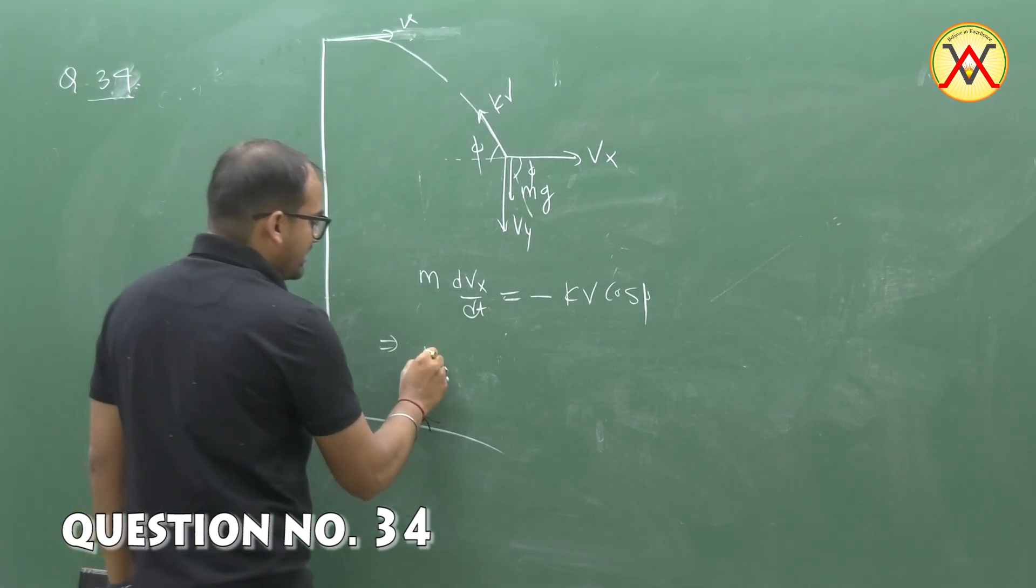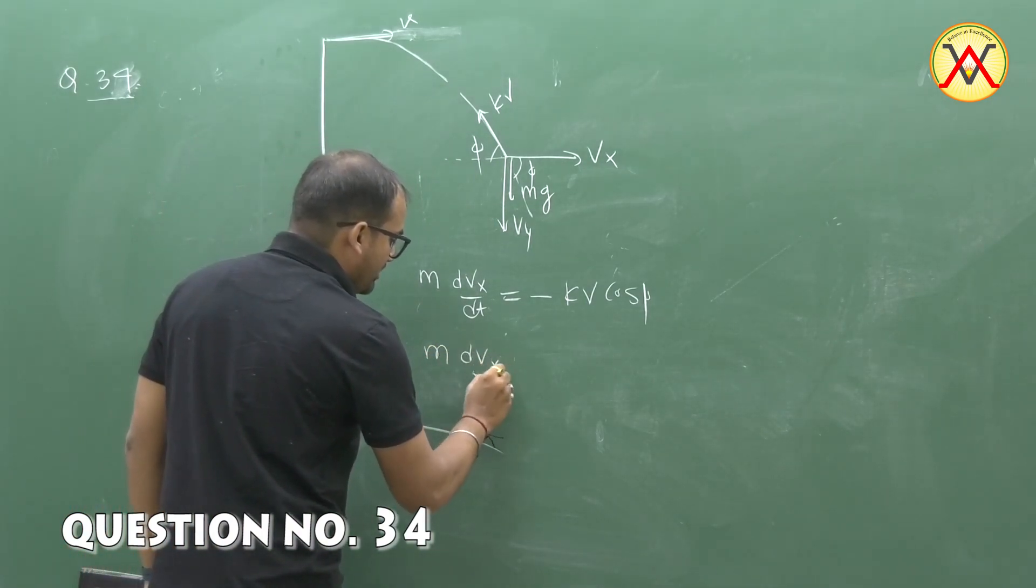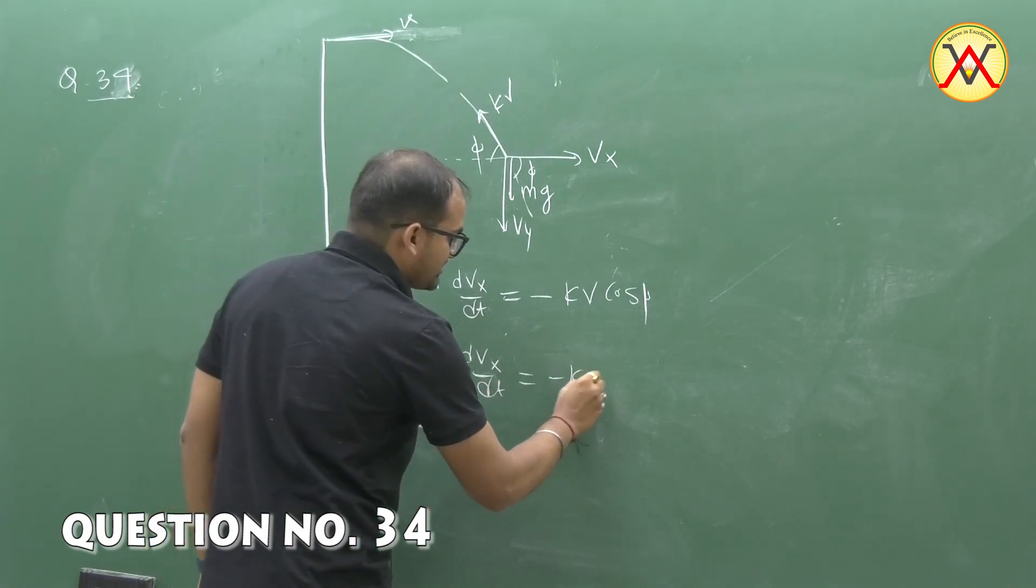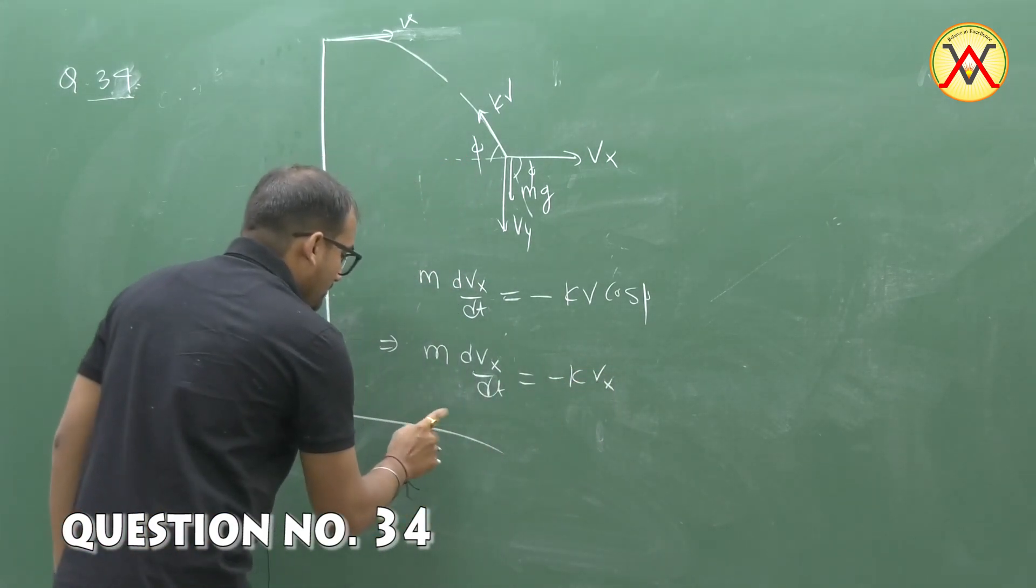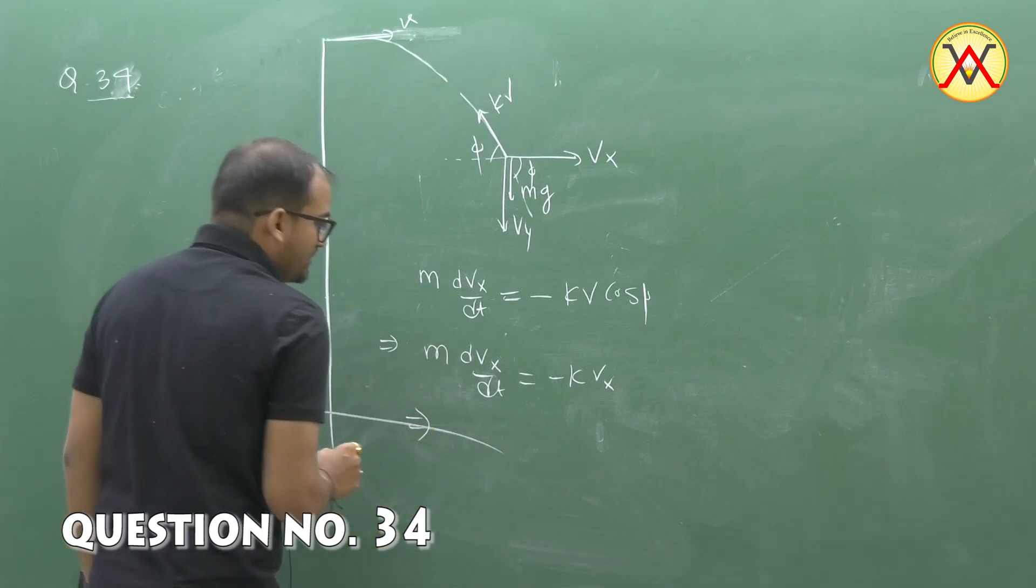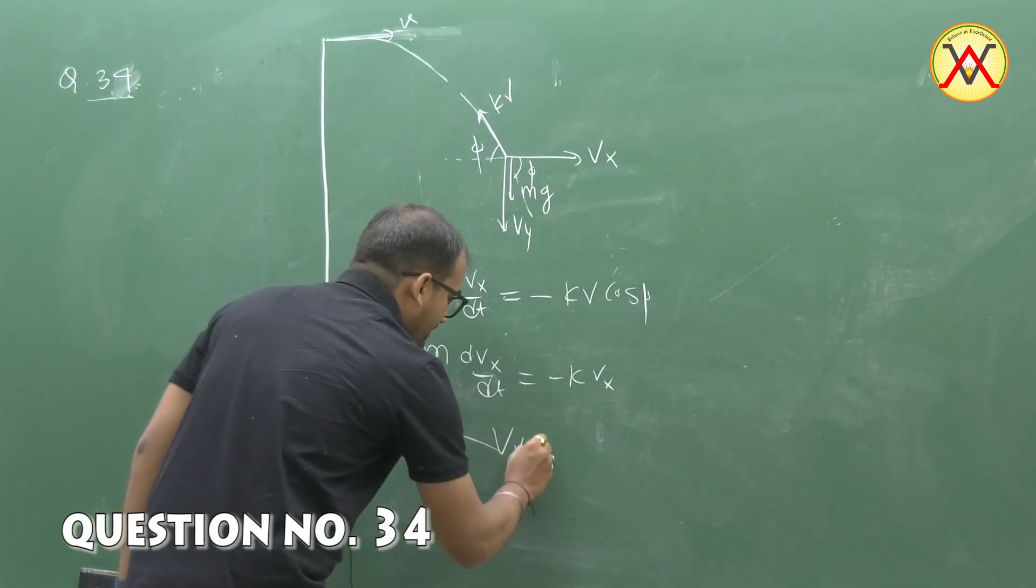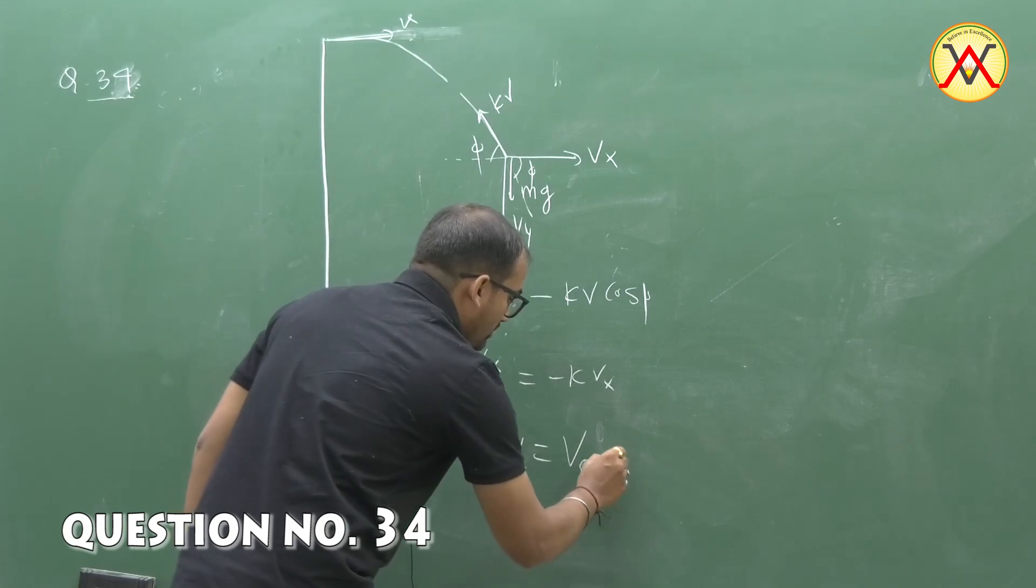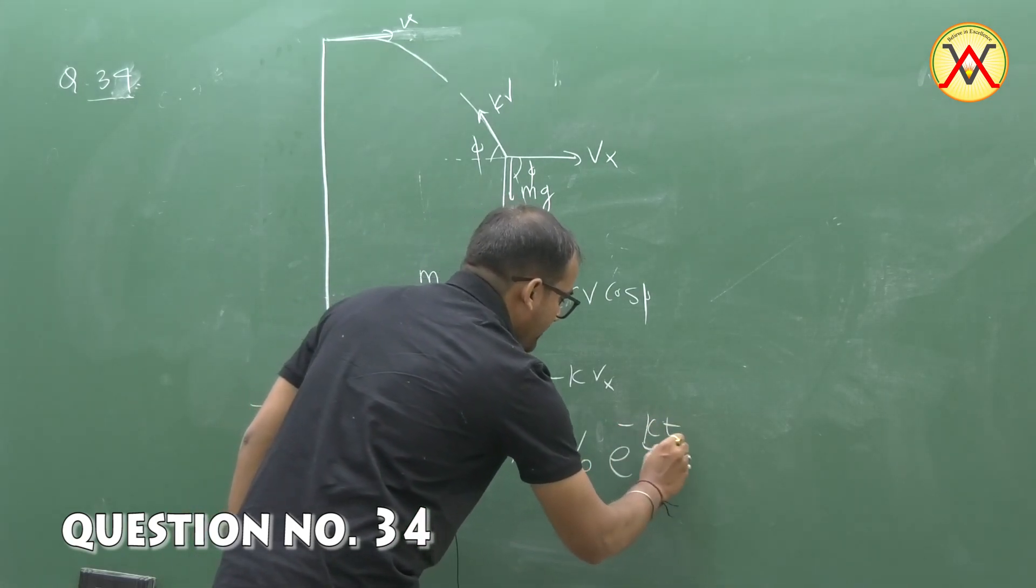From this expression we can write mdvx by dt equals minus kvx. By solving this differential equation, we can say that vx equals initial velocity v0 into e to the power minus kt by m.